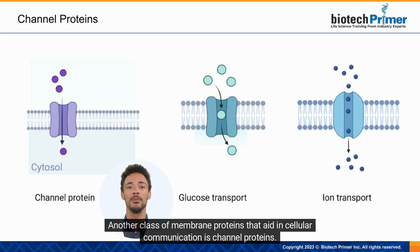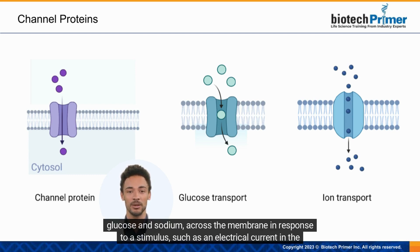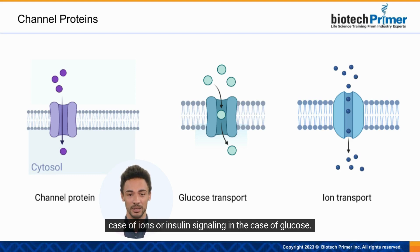Another class of membrane proteins that aid in cellular communication is channel proteins. These proteins act as molecular gates that allow the passage of small molecules and ions — for example, glucose and sodium — across the membrane in response to a stimulus, such as an electrical current in the case of ions, or insulin signaling in the case of glucose.